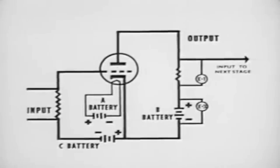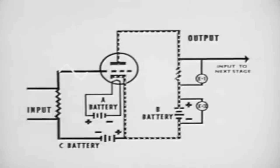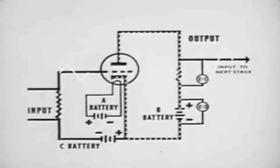It should be especially noted that the original signal influences only the current flow through the tube, and the plate voltage change becomes a new signal which is an amplified reproduction of the input signal.